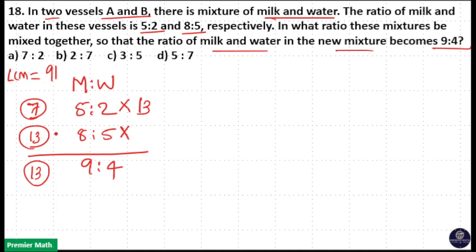13 into 7 is equal to 91. Multiply second ratio with 7 because it is 13 parts. You need to make it 91 parts. Multiply second ratio with 7.